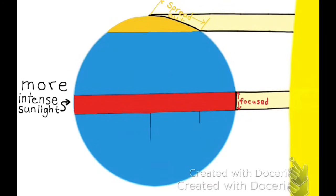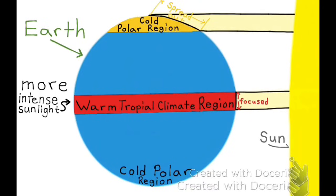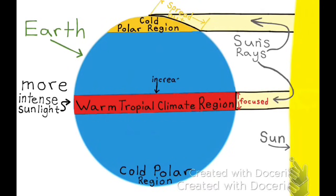This creates the tropical region at the equator and polar region at the poles. The further a region is from the equator, the cooler the temperatures. The further a region is from the poles, the warmer the temperatures.